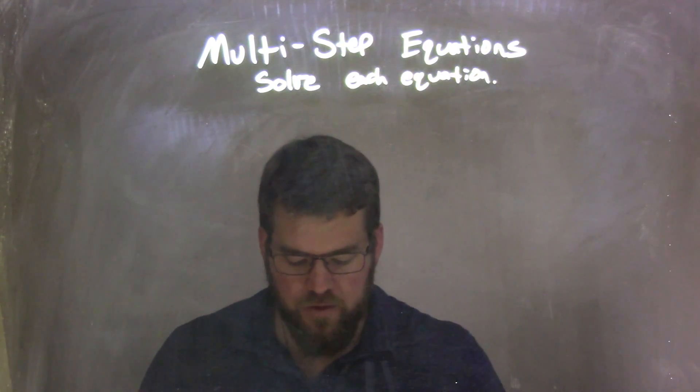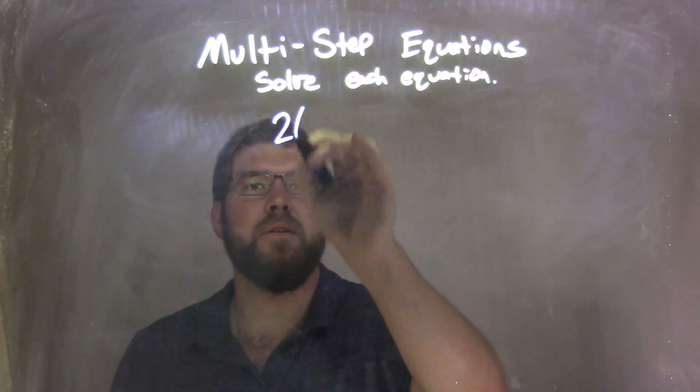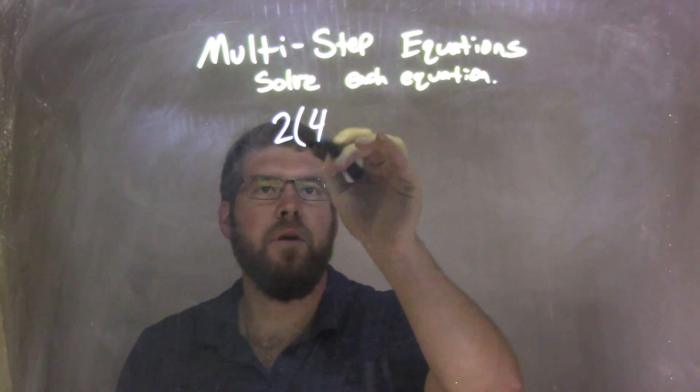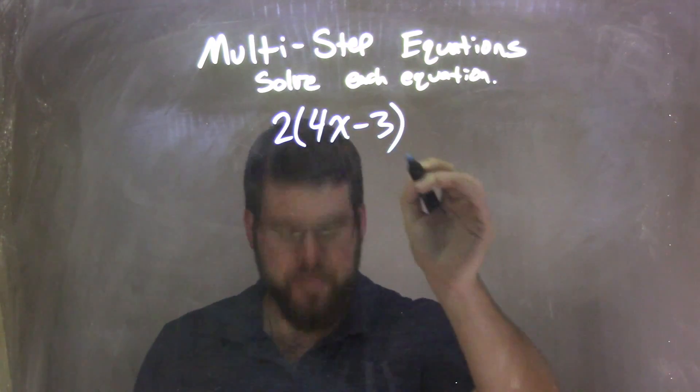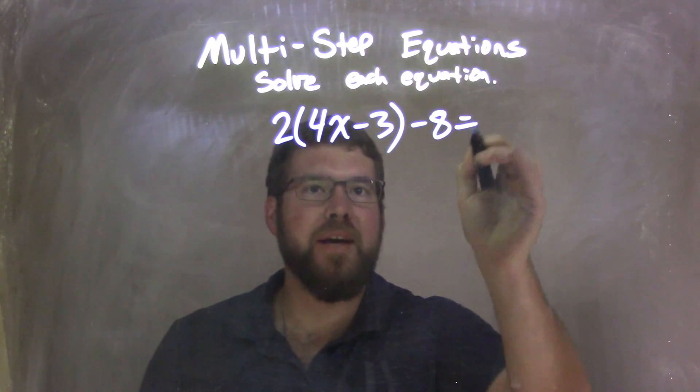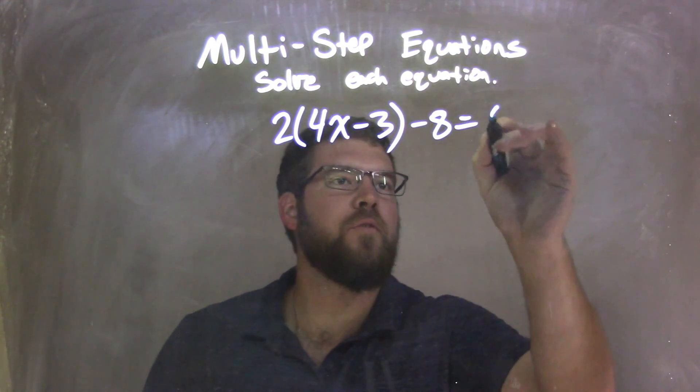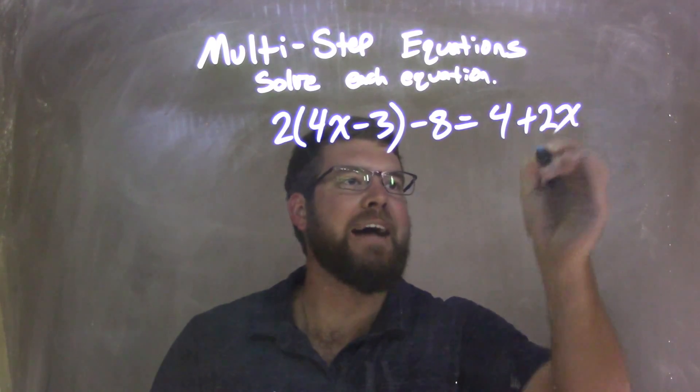So if I was given this equation here: 2 times 4x minus 3, minus 8, getting tricky here, equals 4 plus 2x.